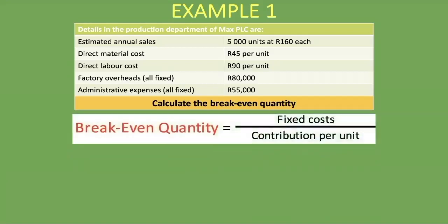Let's bring back our formula: fixed costs divided by contribution per unit. We are already given the fixed costs — the factory overheads, which are all fixed, and administrative expenses, which are also all fixed. So we're going to add together 80,000 rand plus 55,000 rand to get our total fixed costs, and then divide that by the contribution per unit.